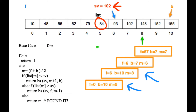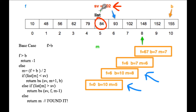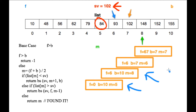We check again: list[m] is 148. Is it less than our search value of 102? No. Is list[m] greater than 102? Yes — 148 is greater than 102. So we go into the else-if branch and make a recursive call, passing in search value, keeping front the same, and setting back to m minus 1. So back becomes 7.